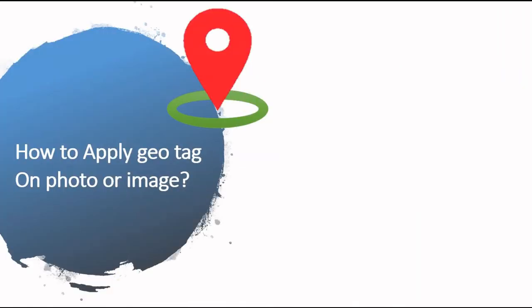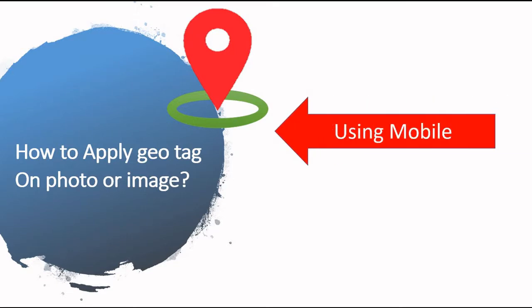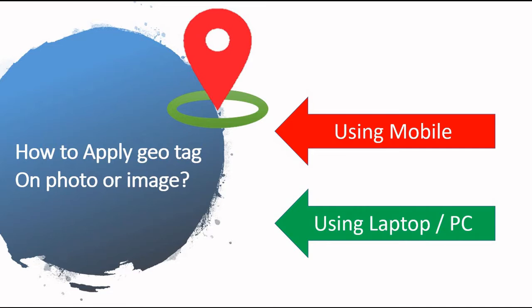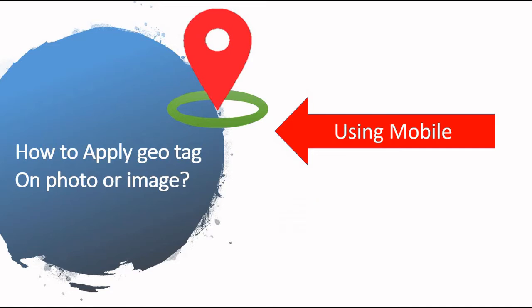So first of all, we will see how to apply the Geotag on a photo or image. There are two ways: the first one is by using mobile and another one is by using a laptop or a PC. So first we will see how to apply the Geotag on a photo or image by using your mobile.